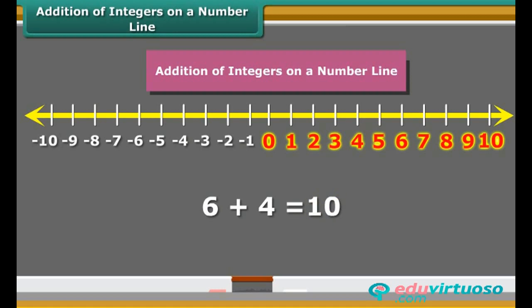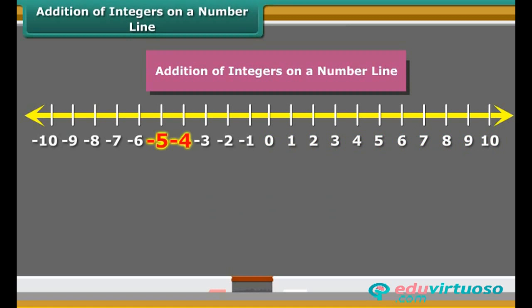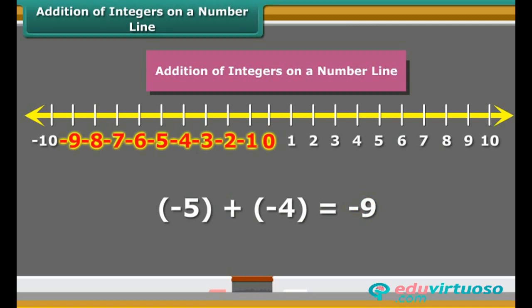Let us add two negative numbers, minus 5 and minus 4 on the number line. In this case, first we move 5 steps to the left of 0, reaching minus 5. And then, we move 4 steps to the left of minus 5 and reach minus 9. So, we see, when we add two positive integers, their sum is a positive integer. When we add two negative integers, their sum is a negative integer.